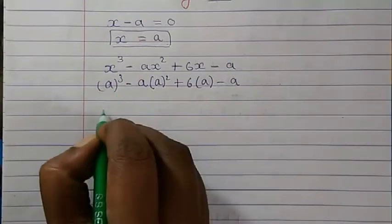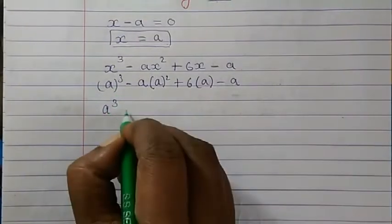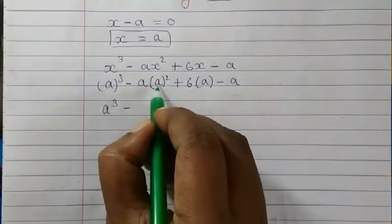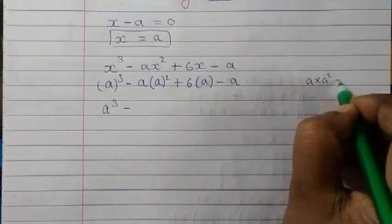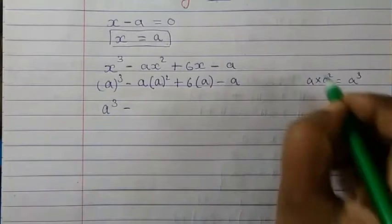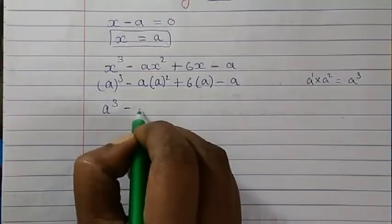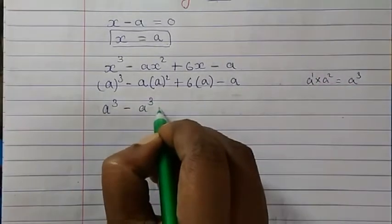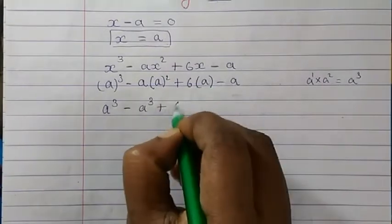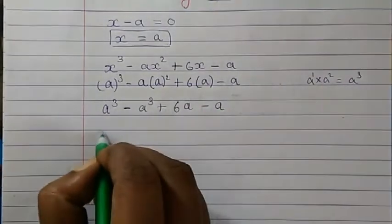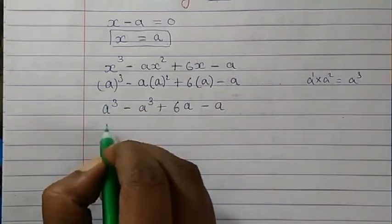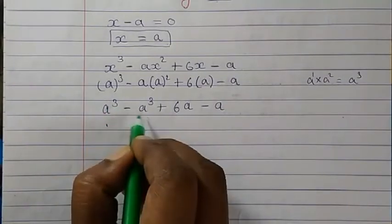Now a³ will remain a³ minus a. Now a into a² we will get a³ because there is 1 there. So it will become a³ + 6a - a.